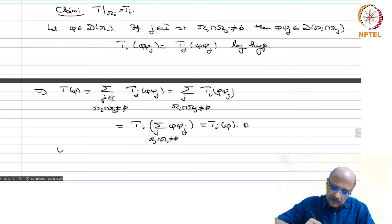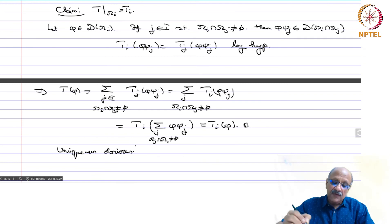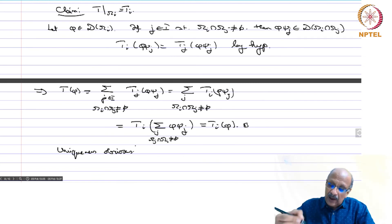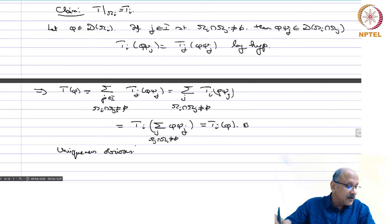Uniqueness is obvious because if you want t to equal t_i on each sub-domain, you have to define it only this way — you cannot define it by any other method.